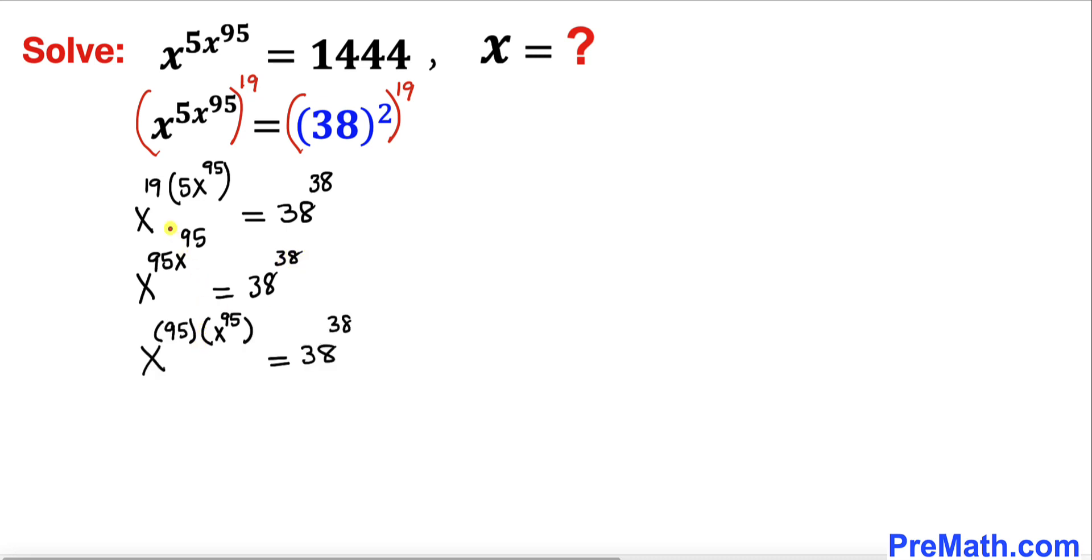Now in this next step, this part 95 times x power 95, I can write it in parentheses as 95 times x power 95. And now we are going to apply this power rule on the left hand side once again. So this could be written as x power 95 whole power x power 95, and the right hand side is going to stay the same, 38 whole power 38.